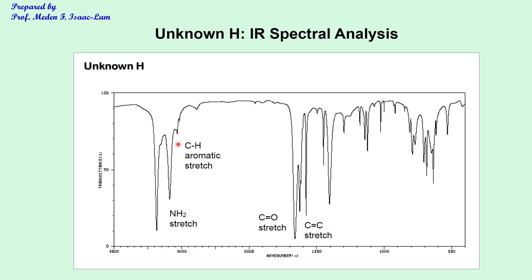There is a peak of weak intensity below 3,000 corresponding to the CH aromatic stretch. There is a strong absorption band close to 1,700 or 1,650, which is the C double bond O stretch. And then C double bond C stretch corresponds to two medium intensity absorption bands. That is the assignment for the IR.